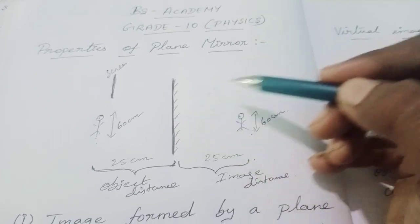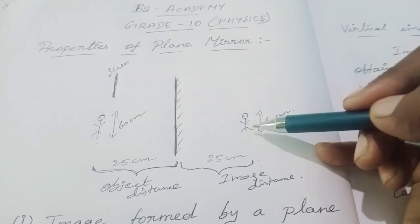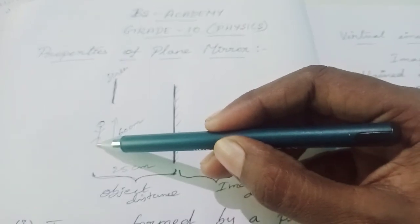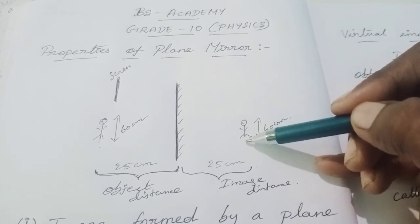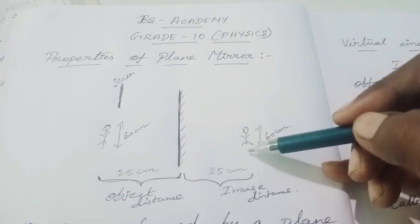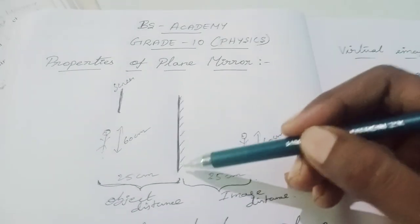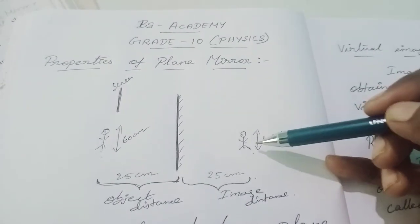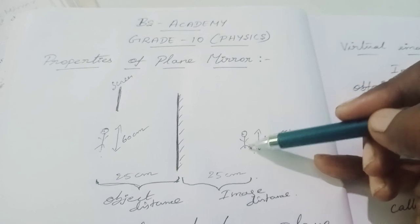In the case of a plane mirror, the nature of the image formed is virtual. It is also erect — erect means the image is not inverted top to bottom. If the object is placed upright, the image will also be upright. So in the case of a plane mirror, the nature of the image is virtual and erect — it cannot be obtained on a screen, and it is not inverted.